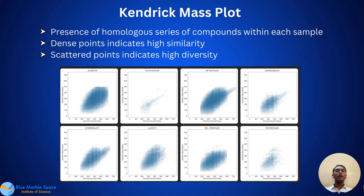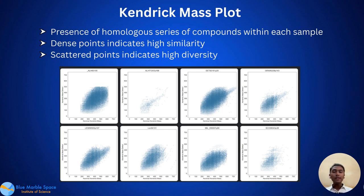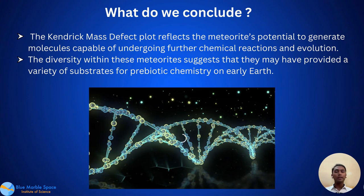After plotting and various mathematical calculations, we got these graphs. These graphs indicate the presence of homologous series of compounds within each sample. The dense points — like the one on the far left and on the middle right — indicate high similarity, while the scattered plots — like those on the middle left and the extreme right — indicate high diversity.